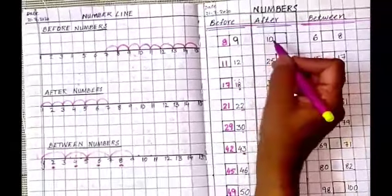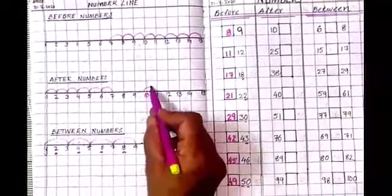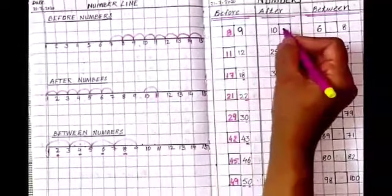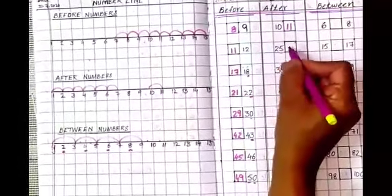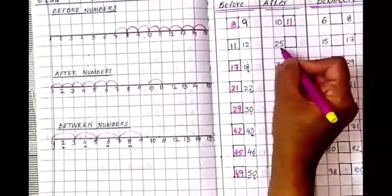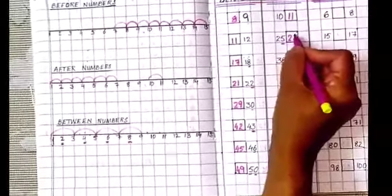Now after number, you know very well. You can do it very fast. After 10, 11 is here. After 25, just write after 25, after 5. Here also you have to check the 1's place. After 25, change it. 26.